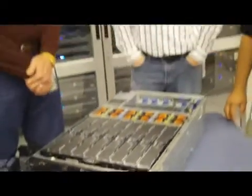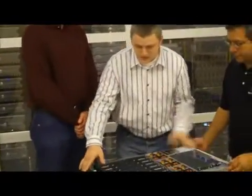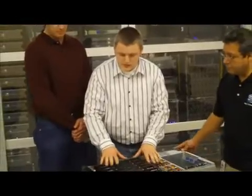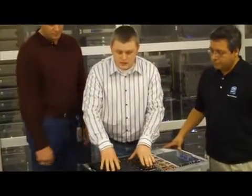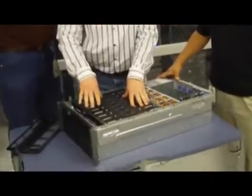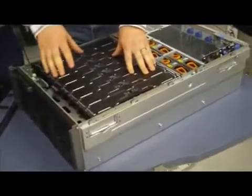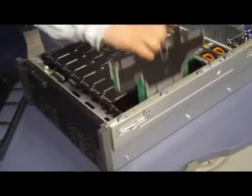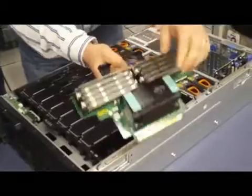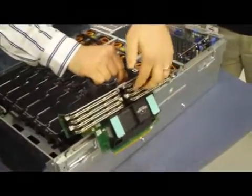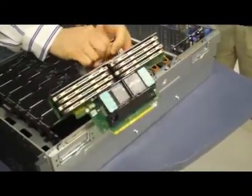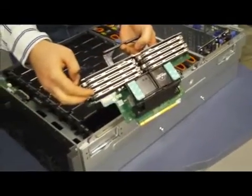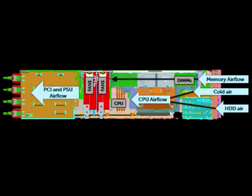Dominic will describe some of the thermal details. Looking at the architecture of the R910, component placement is really driven by thermal requirements. We need fresh air inlet to the memory and processors. Looking at the memory riser, the memory sits directly above the processors. This allows us to get fresh air into the memory and fresh air into the processors, to minimize the amount of airflow needed to cool these components.